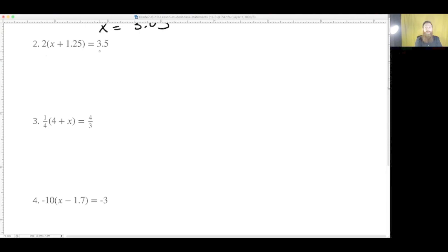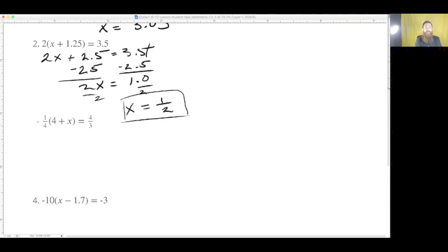So let's try number 2. So we could divide by 2, but then we're dividing a decimal. I think it's easier to just use the distributive property. So multiplying everything on the inside is 2x plus 2.5 equals 3.5. Now we subtract 2.5 from both sides. Be careful when lining up the decimal minus 2.5. That's 0, and we're left with 1. 2x equals 1. We divide by 2. x equals 1 half.